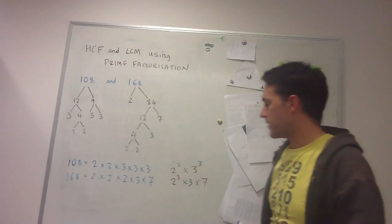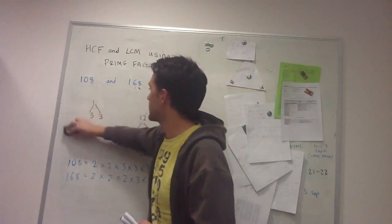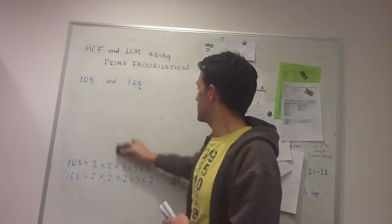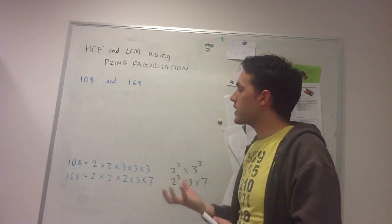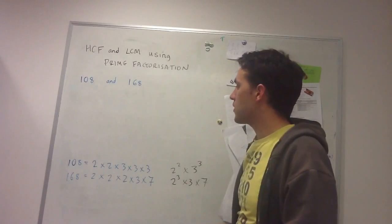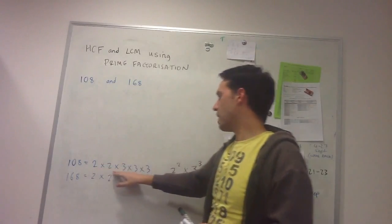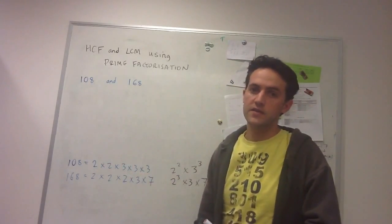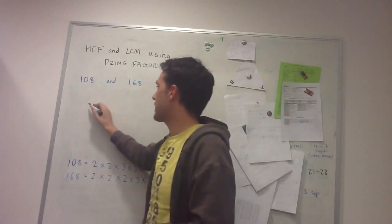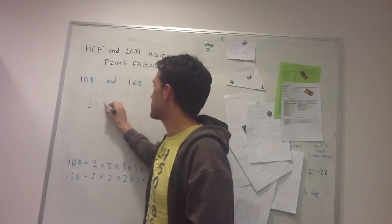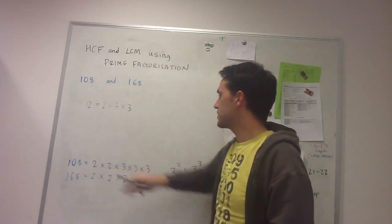So now that I've got the prime factorization, what I keep in mind is that all the factors of 108 are made up from combinations of these 2's and 3's. So for example, one of the factors of 108 as we saw before is 12, which is equal to 2 times 2 times 3, so it grabs the two 2's and a 3.